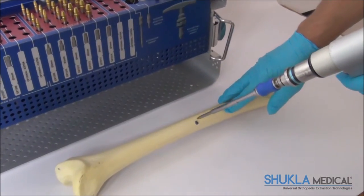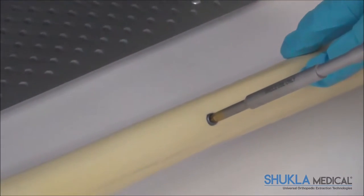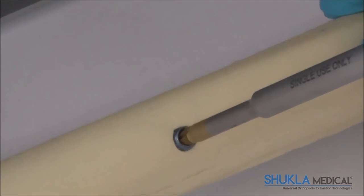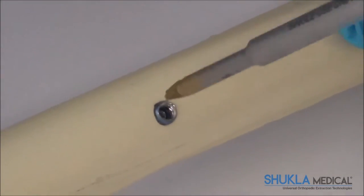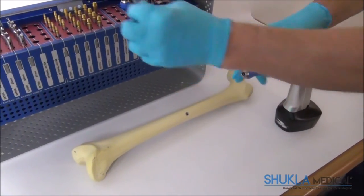After the stripped screw extractor is connected to the driver, the tip is inserted into the screw well that is stripped. The extractor tip should come in contact with the side walls of the screw well, and not touch the bottom of the well. If the tip does touch the bottom of the well, a larger size tip should be used.